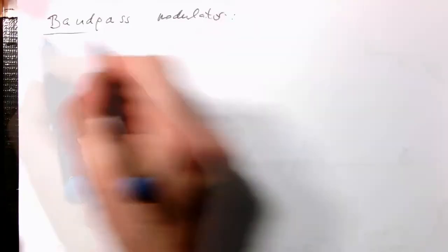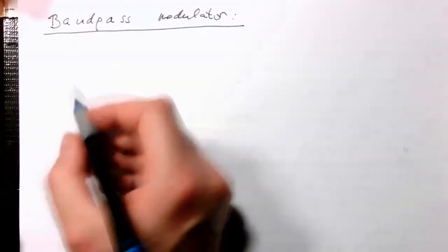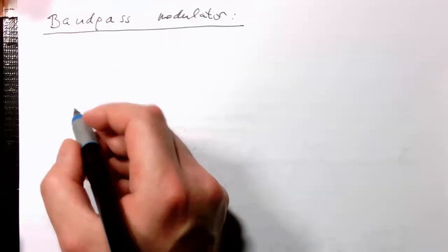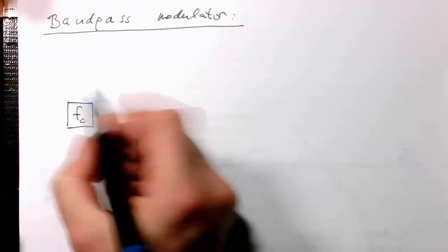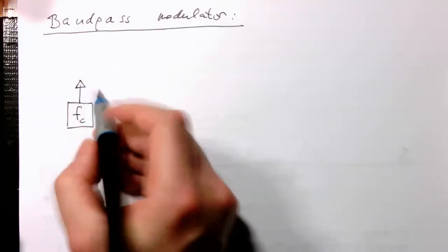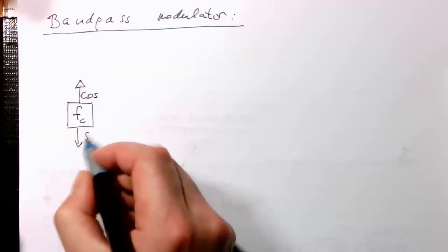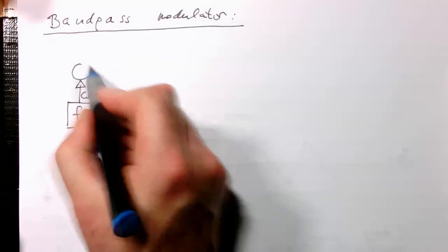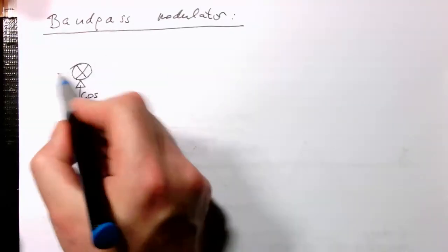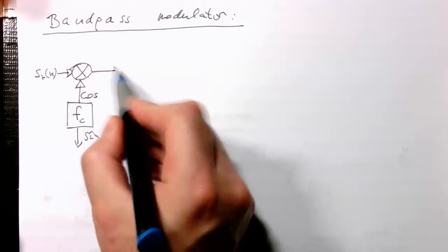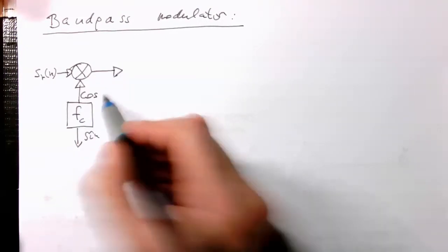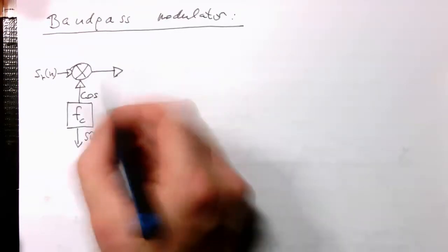Let's have a look at how we can understand this modulator in greater detail. We've got our bandpass modulator — and remember, it's quite a simple idea. We've got our carrier frequency fc, which is generating a cosine and a sine. The cosine is multiplied with our input signal, in this case the real part sr of n, and then we're getting our bandpass modulated signal out.